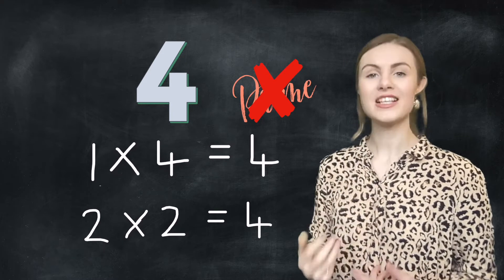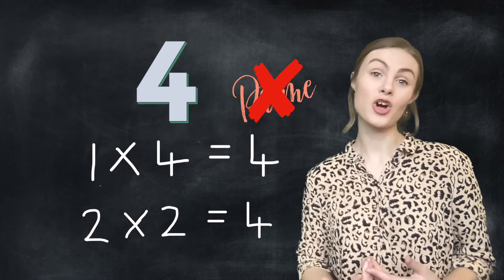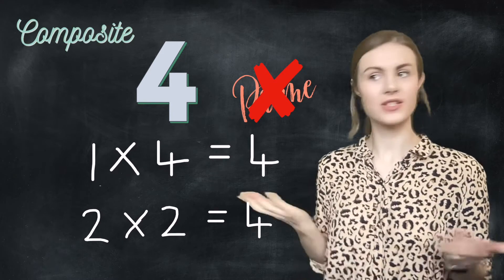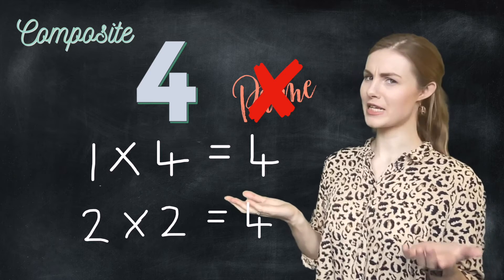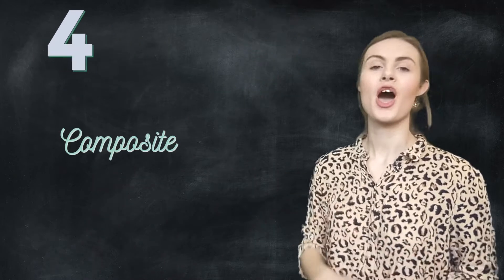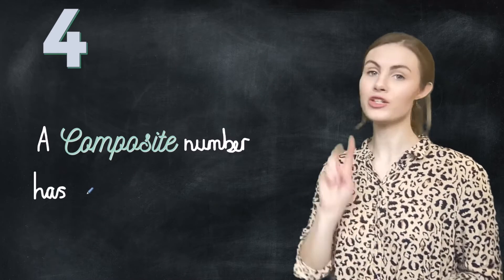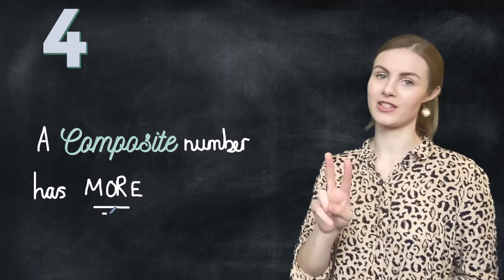This means four is a composite number. What's the definition of a composite number? A composite number has more than two factors.